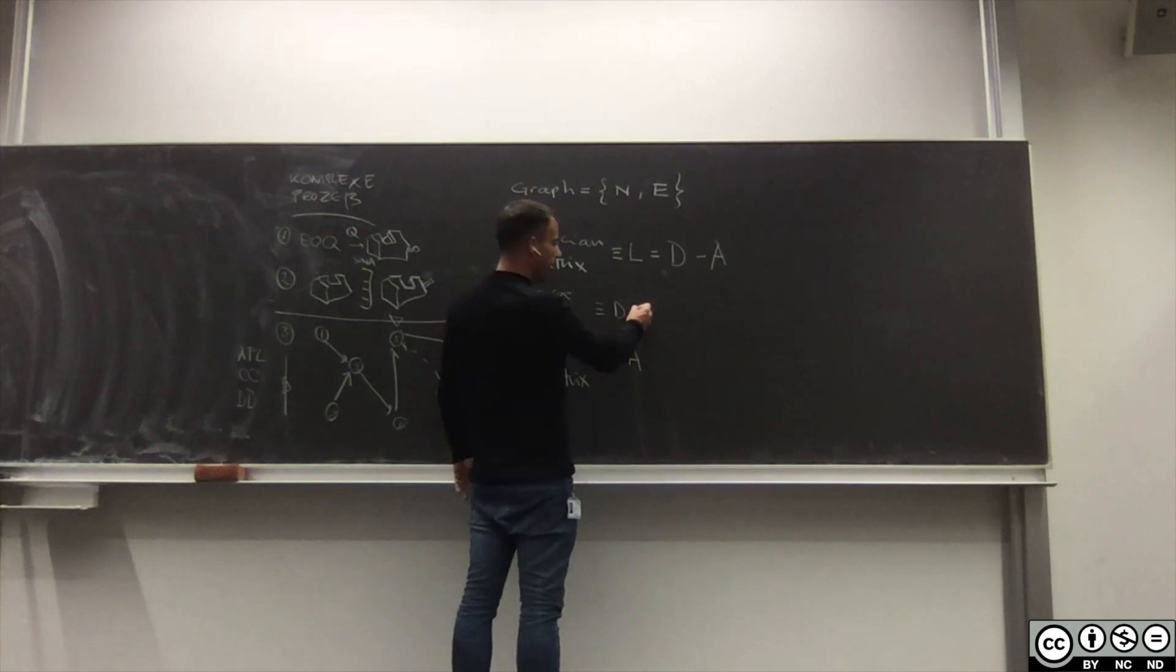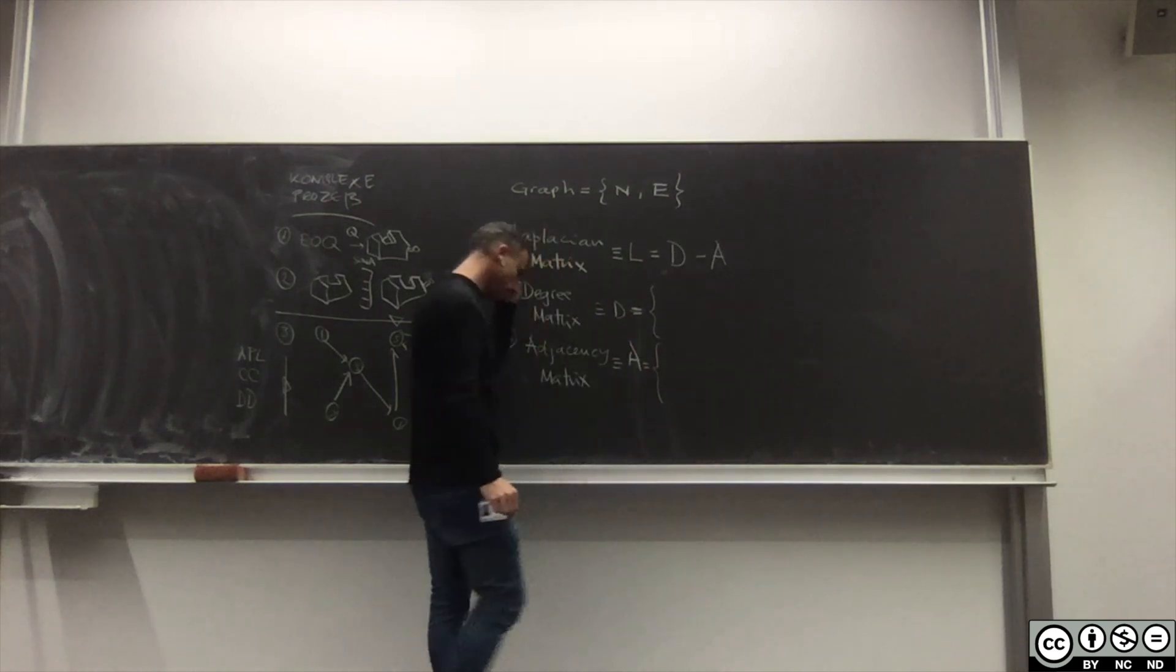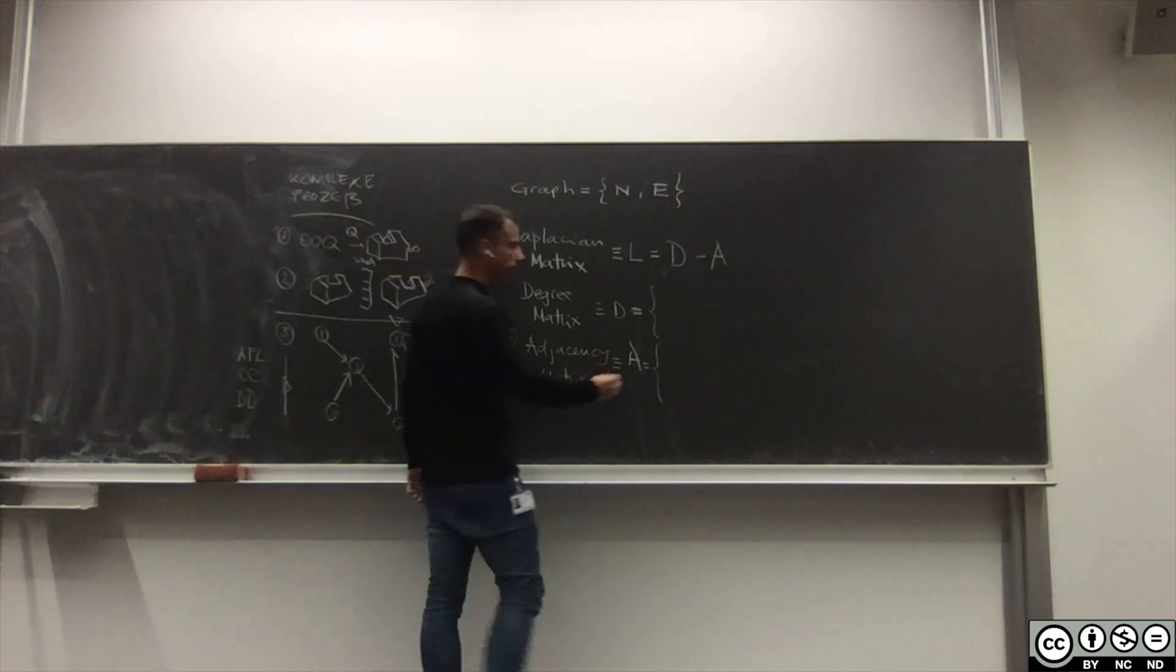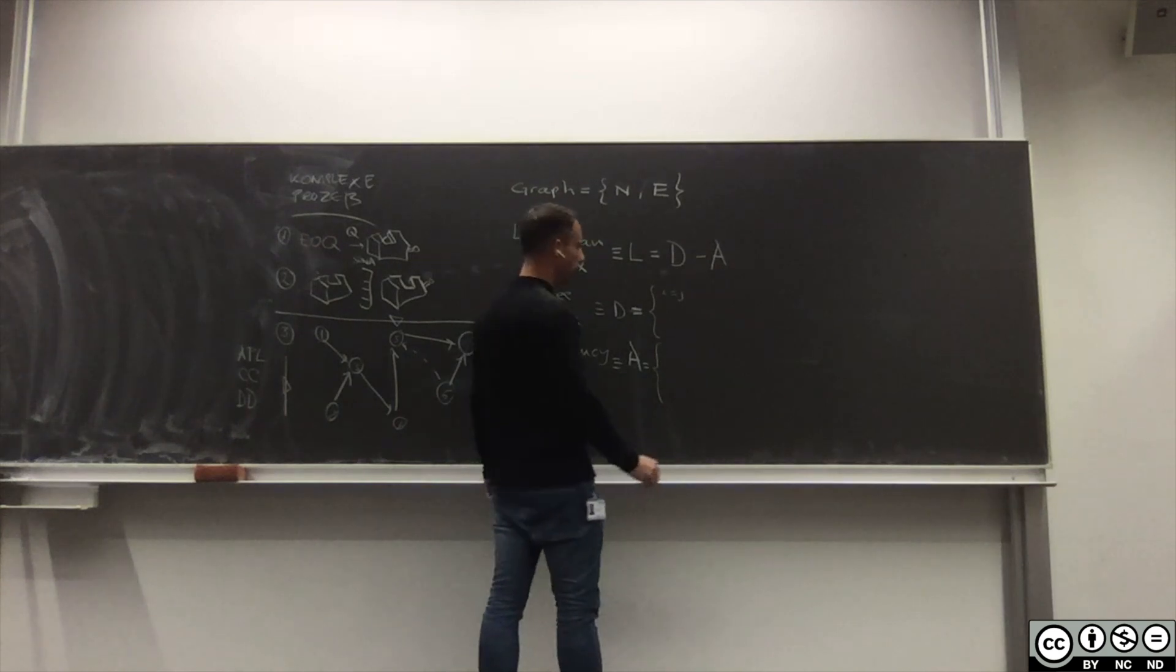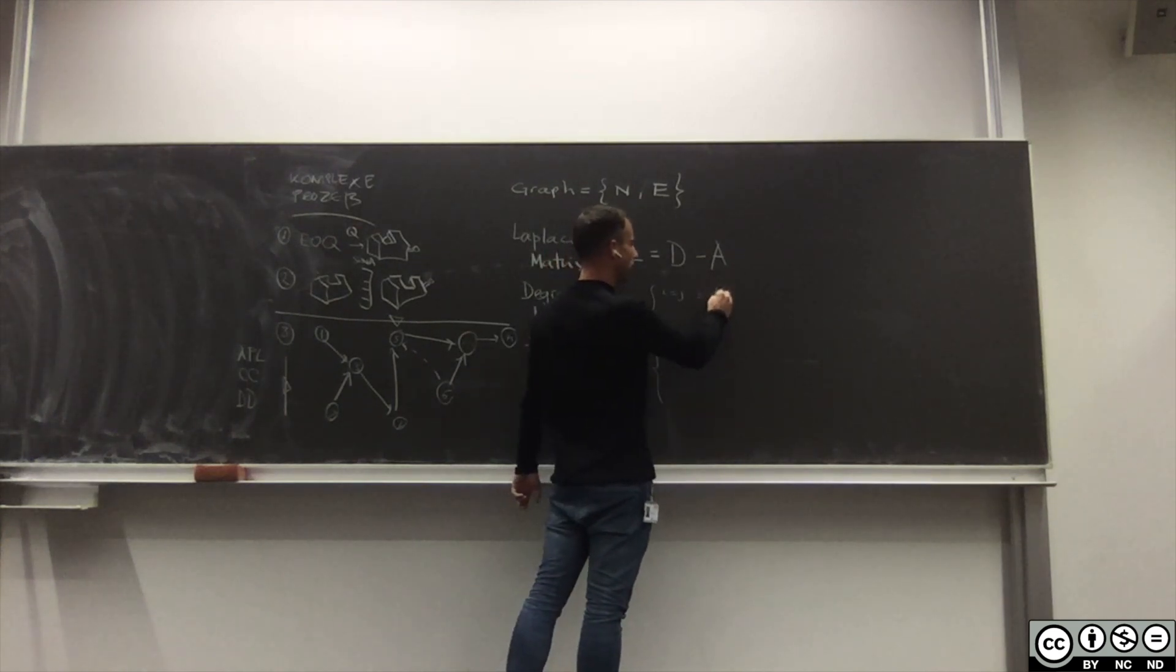Wenn I gleich J, das ist eine Matrix wie gesagt, wenn I gleich J beim Degree Distribution dann hole ich mir den Degree von I.